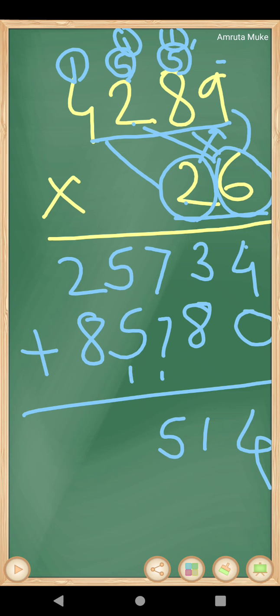5, 5, 10 and 10 plus 1, 11. 11's 1 here, 1 I am carrying over here. 8 plus 2, 10. 10 plus 1, 11. So, the answer, 111,514.